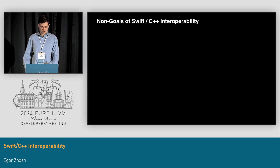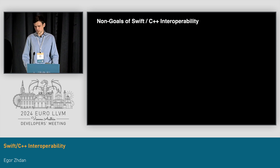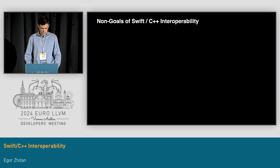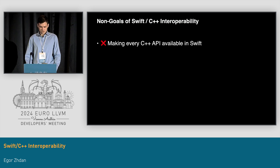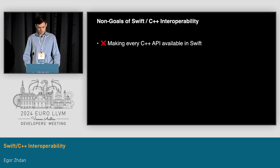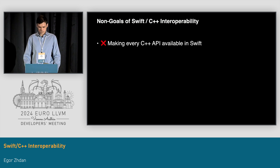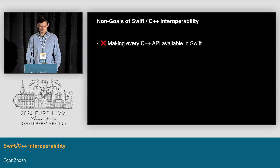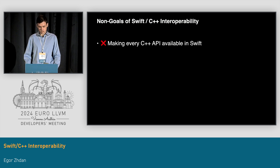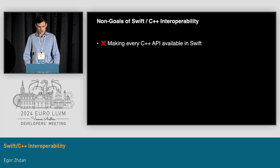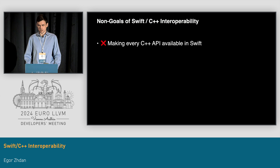Let's also explicitly mention some of the non-goals of this project. First, making every single C++ API out there available in Swift. The fact that this is a non-goal is a consequence of our goals to preserve Swift's memory safety and security guarantees. C++ APIs often don't provide the same level of security guarantees that we require in Swift.